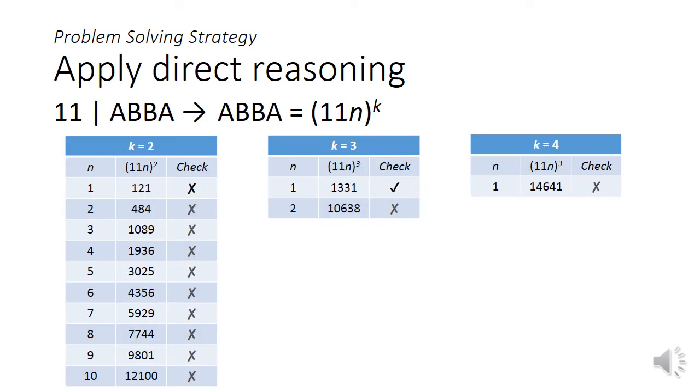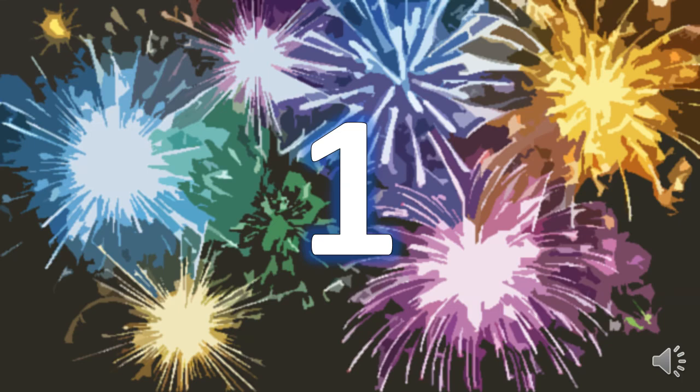We can then make a list of every perfect power with a base that is a multiple of 11. Starting with squares, you can see that 11 square and 22 squares are palindromic, but they are only three digits. 33 square to 99 square are all non-palindromic. Looking at the cubes, 11 to the power of 3 meets the requirement. 22 to the power of 3 is five digits, so it is too big. For higher powers, 11 to the power of 4 is already five digits, so there is no need to consider any larger power or base. Hence, there is only one four-digit palindromic number that is also a perfect power.